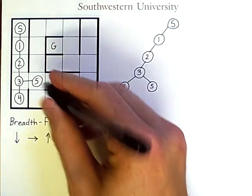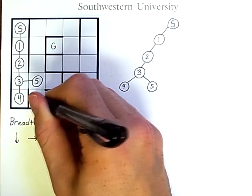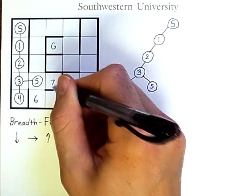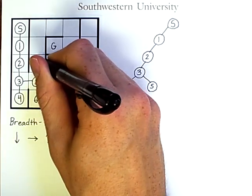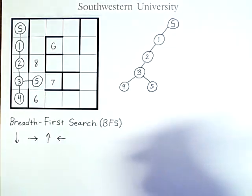Down, right, then up. Going down would lead me to the sixth node I will check. Going right will lead me to the seventh. Going up will lead me to the eighth. I don't go left because I've already checked that position.